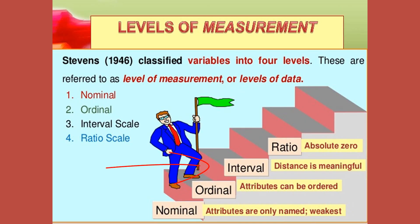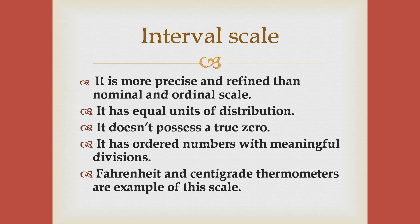The third level of measurement is the interval scale of measurement, and it is a type of scale characterized by equal intervals between scale units. The scale is made up of equal units so that the difference between 40 and 50 degrees Fahrenheit is equal to the difference between 40 and 60 degrees Fahrenheit. Other examples include standard tests and the Likert scale. Temperature scales are a common example of interval measurement.